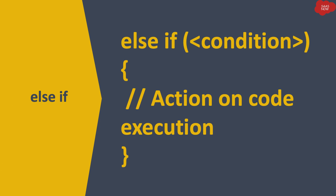Now for else if. The syntax of else if is: you write else, then a space, then if — these two keywords are used together. Then you put the condition in brackets, and then opening and closing curly brackets. Within those brackets you write your code which you want to execute. Whenever that condition in else if is true, this code will be executed.